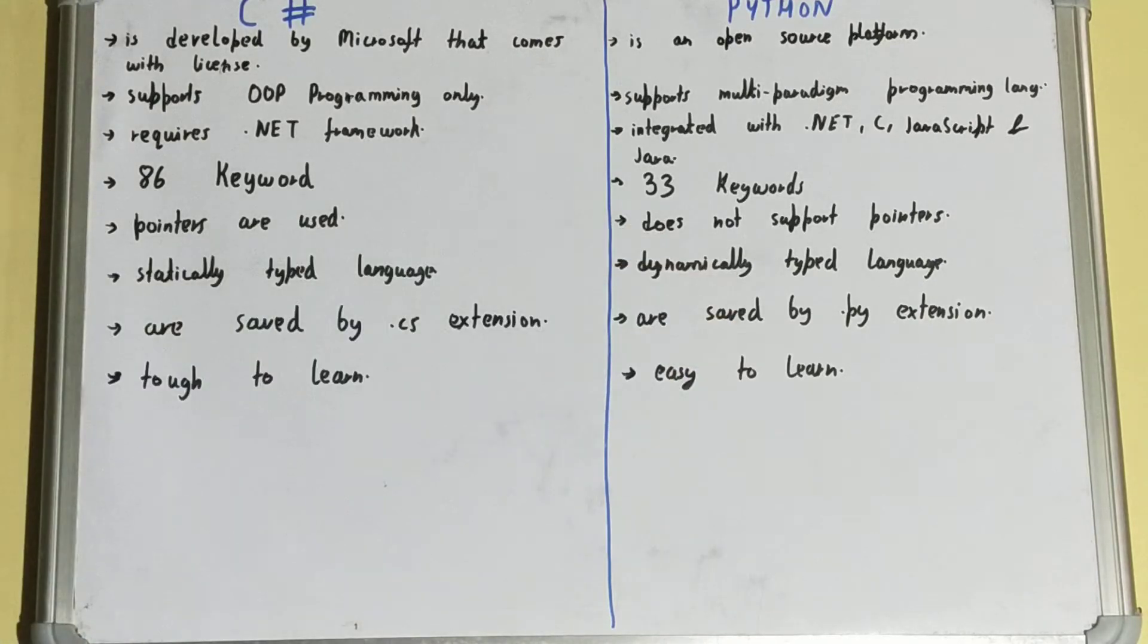C# is a statically typed language, meaning the variables are declared at compile time. But in Python, variables are declared at runtime, so it is a dynamically typed language.